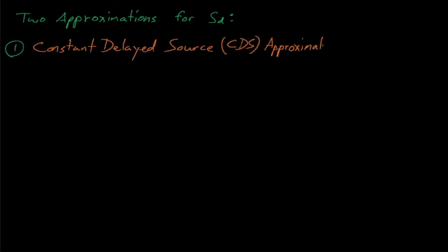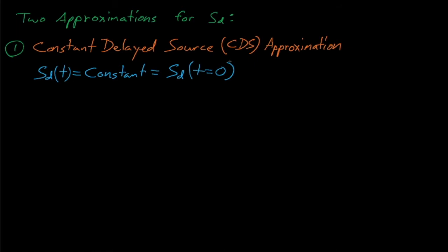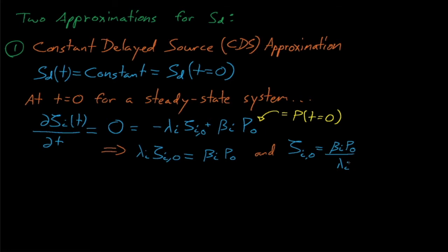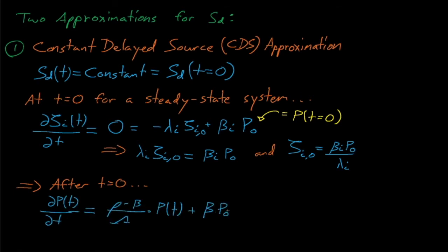As its name suggests, the constant delayed source approximation assumes that the source of delayed neutrons in our problem is constant throughout the duration of our transient, and that it's equal to the initial steady state source of delayed neutrons from the start of the transient. This approximation works really well for rapid high reactivity insertion transients. These transients can happen so fast that the delayed neutron population doesn't really have time to catch up, so the system's delayed neutron source doesn't really have enough time to change compared to what it was before the transient started. Because this approximation assumes that the delayed neutron source is constant, the derivative of our precursor concentration terms are equal to zero. Given the steady state condition, we can solve for the delayed neutron source term, which is also equal to the sum of beta_i times the initial power terms. From here we can substitute in this expression for the delayed neutron source in our point kinetics equations, and then we arrive at a differential equation for the reactor's power that can simply be solved using an integrating factor.